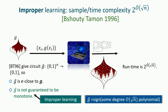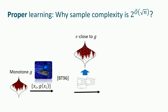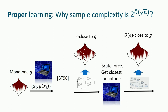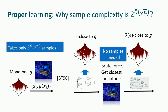You might say: after improper learning, just find the closest monotone function to the polynomial and you're done. The sample complexity is 2^{o-tilde(sqrt(n))}: run Bshouty-Tamon, get something close but not monotone, then do brute-force with no new samples. But the time complexity is unclear — writing down the value at every domain point and solving an LP would be polynomial in 2^n.